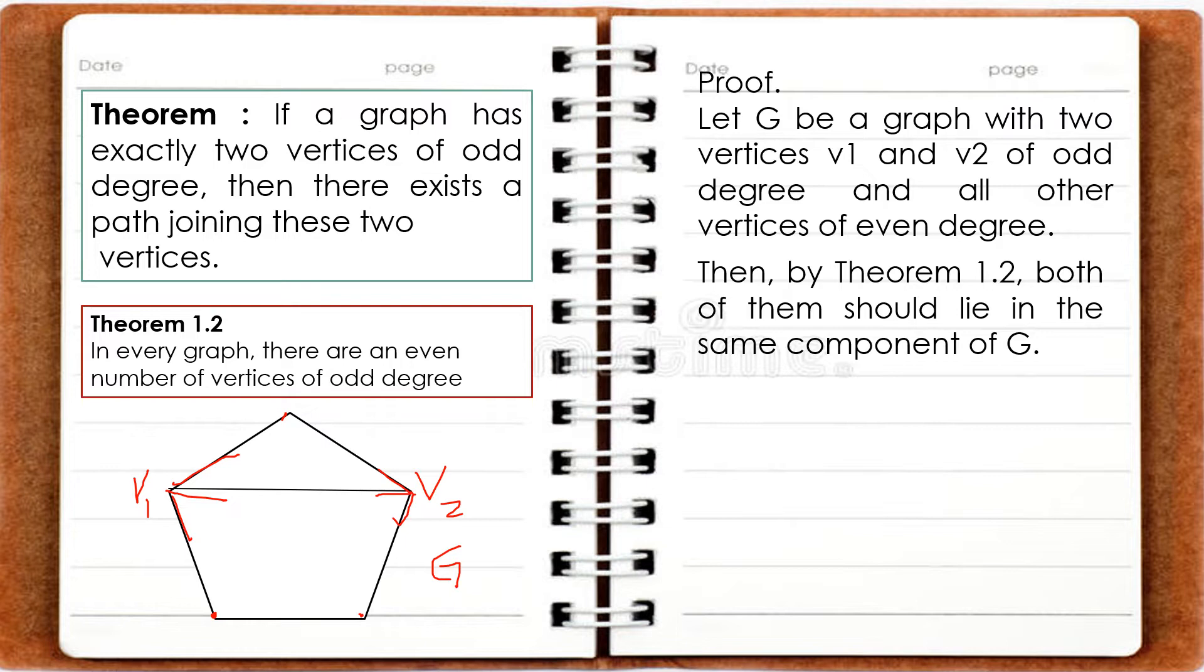So meaning, if there is an even number of vertices of odd degree, then we can find the vertices in one graph. For example, in our graph G...